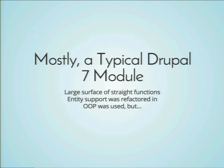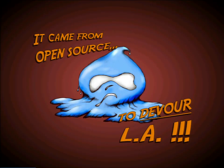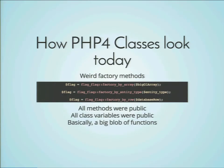The module is a pretty standard Drupal 7 module with a large surface area of straight functions. Entity support was refactored in. Object-oriented programming was used, but it's a bit like the blob. PHP 4 classes are just kind of weird today. In flag, there were a whole bunch of weird factory methods to make objects, because there were no constructors in PHP 4. And all of the object-oriented design in flag 7 came from PHP 4, not 5. All the methods were public, all variables were public, and what we got is a big blob of functions for every flag handler class. It was a mess.